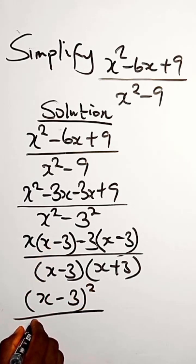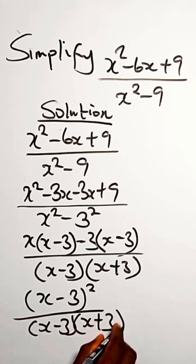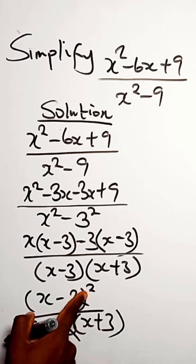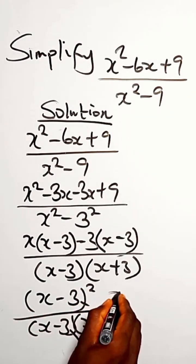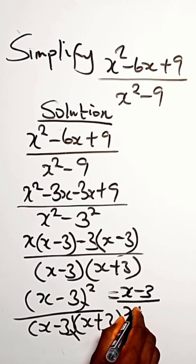Then we have this as (x - 3)(x + 3). You can easily take out one part of this, so we have (x - 3) divided by (x + 3).